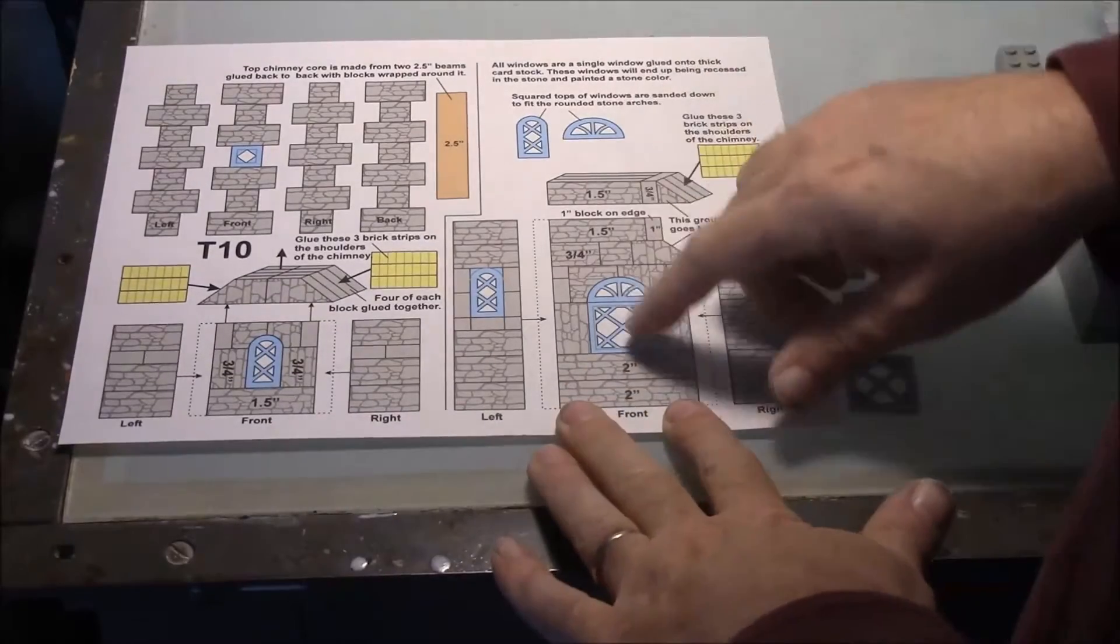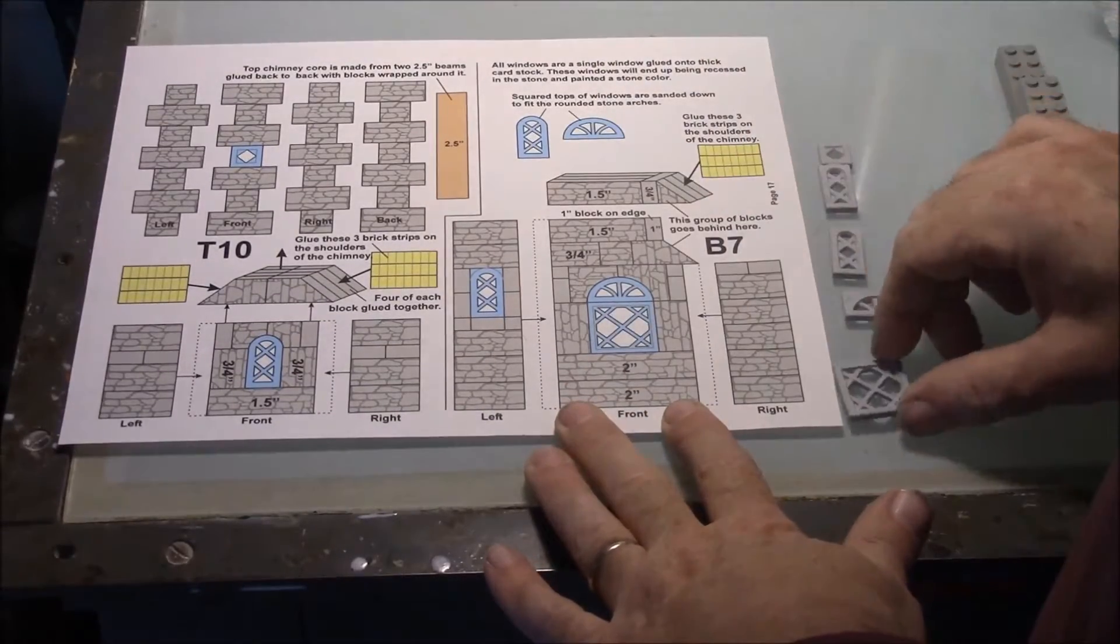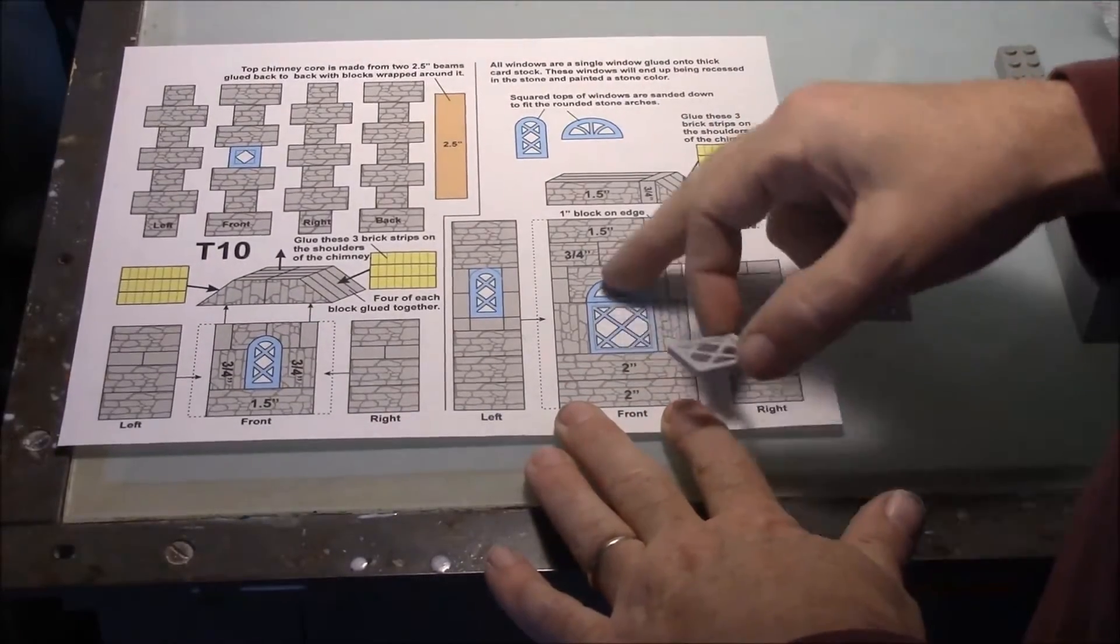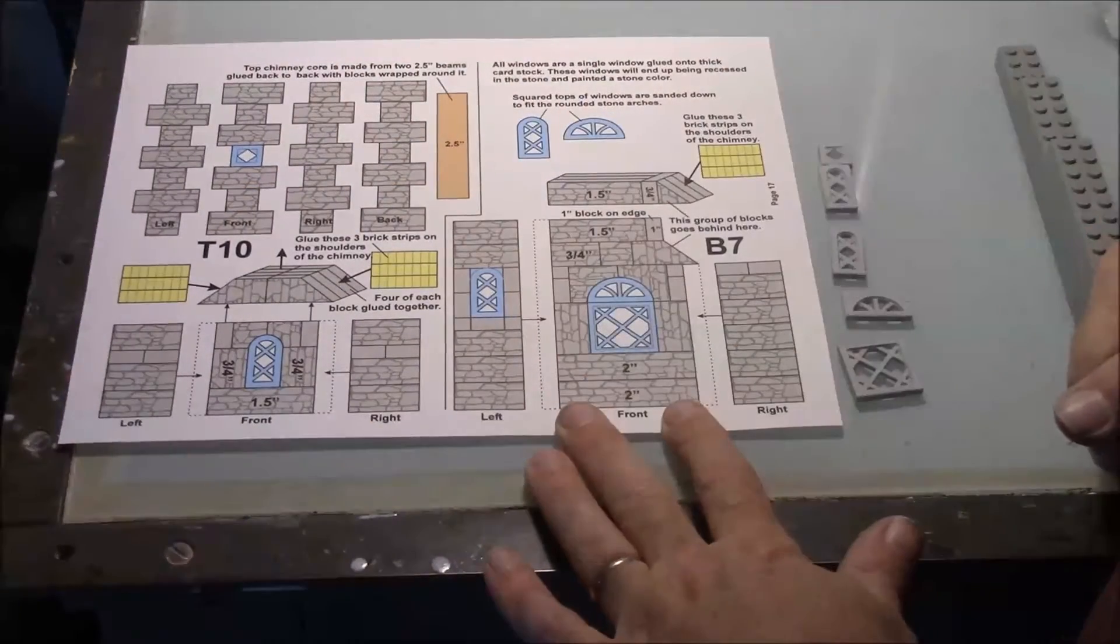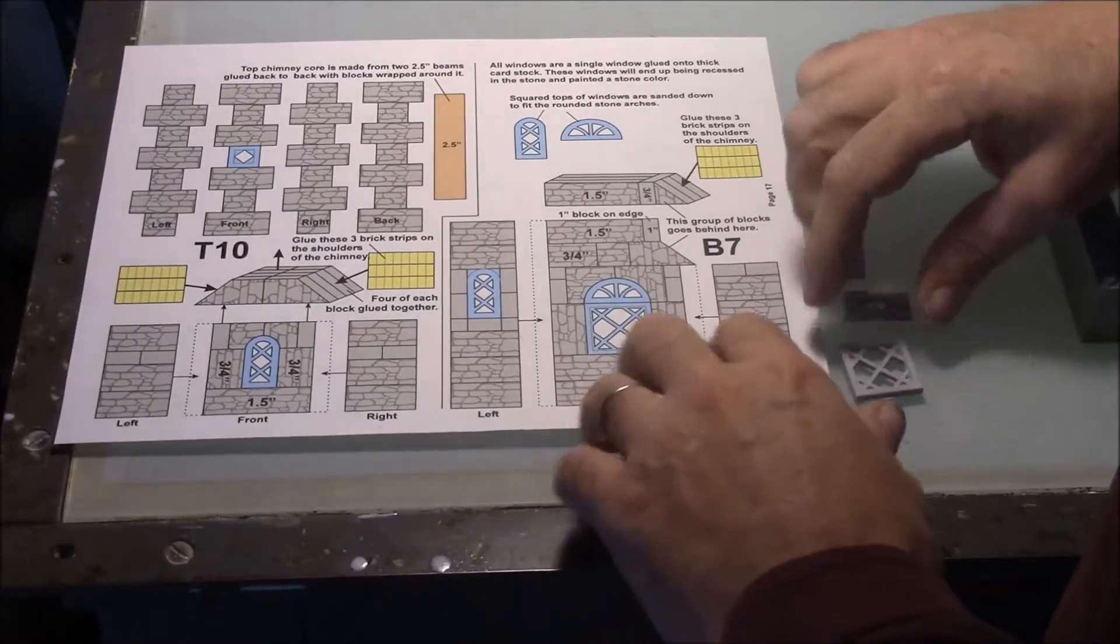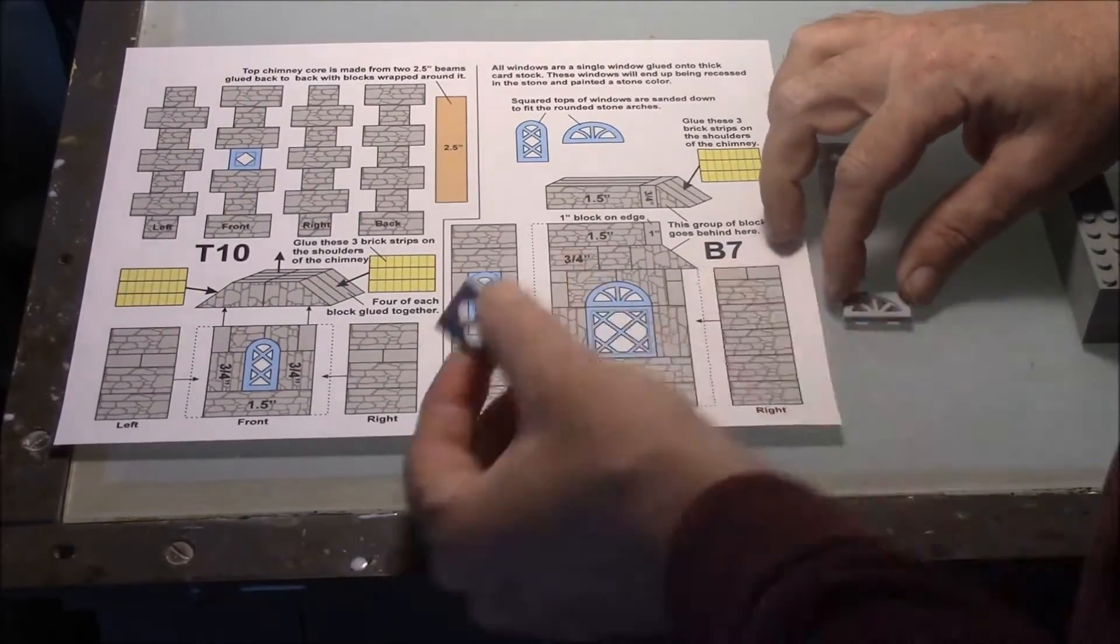The little exception here are these decorative windows that go in. And you notice I've got a window here and a window here. These are going to have a piece of cardstock glued behind them, just like we did with the stone support on the water wheel.